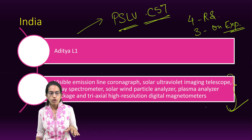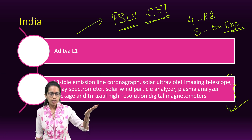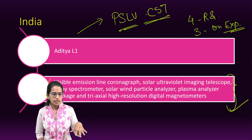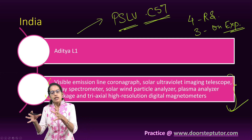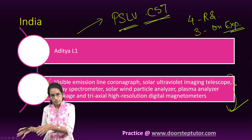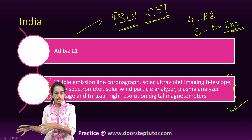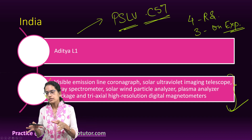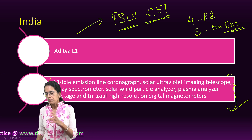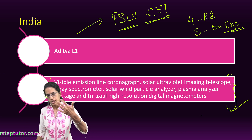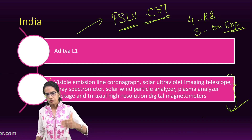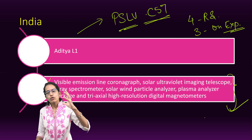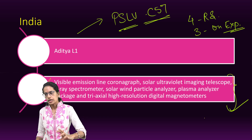The equipment that went with Aditya L1 includes spectrometers, solar wind particle analyzers, plasma analyzers, and high-resolution digital magnetometers, among others. Three layers of the sun — the photosphere, chromosphere, and corona — would all be studied in detail.